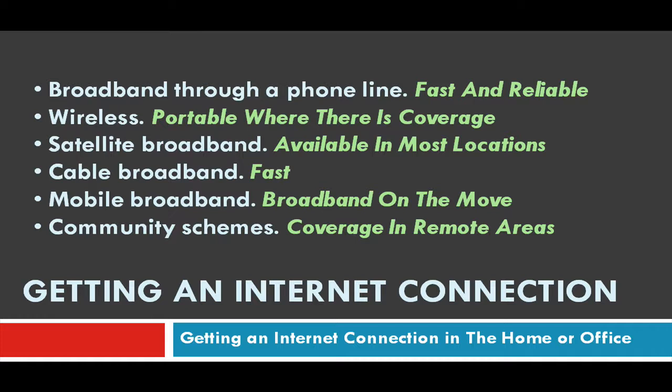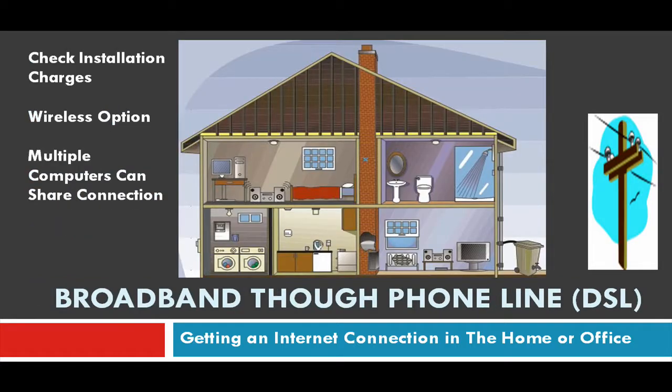Let's take a look at some of the more common types of broadband connections. The first is broadband through the phone line — probably the most common type of internet connection. To get this into your home, you need to have a phone line. If you subscribe for the broadband service, the operator will send you out what is known as a router, sometimes referred to as a DSL router or internet router. DSL stands for Digital Subscriber Line.